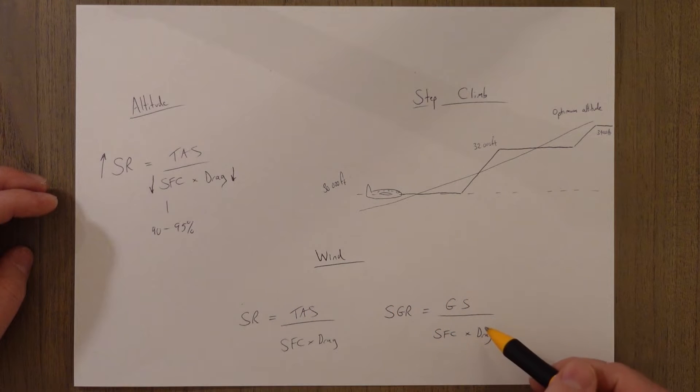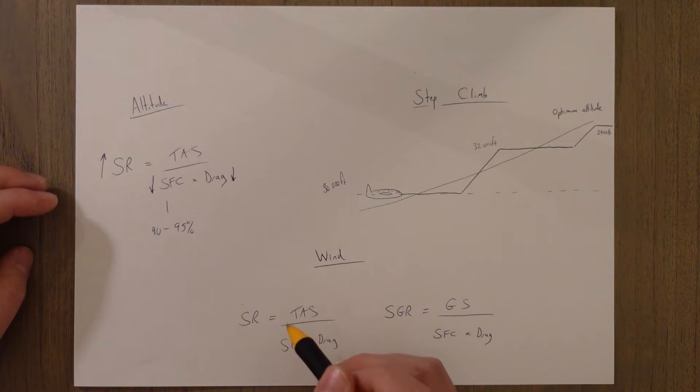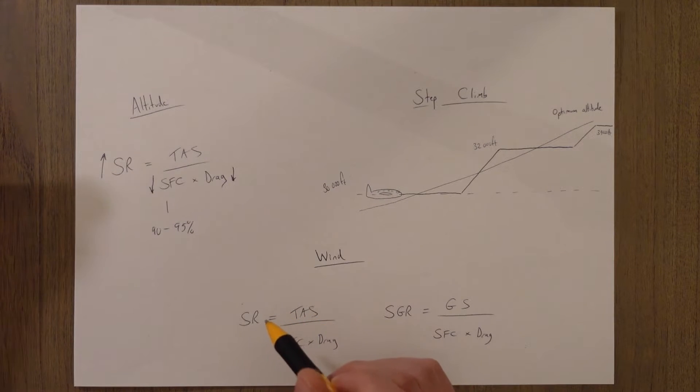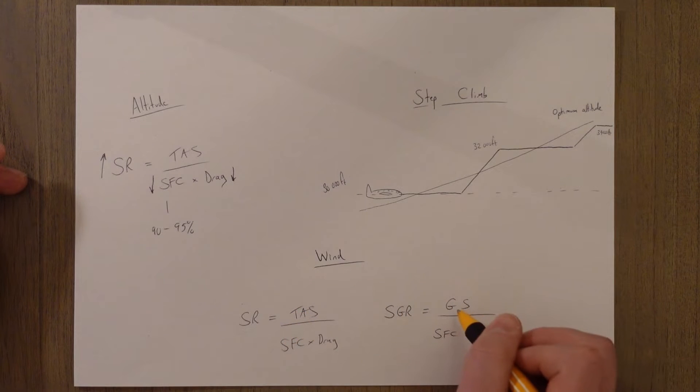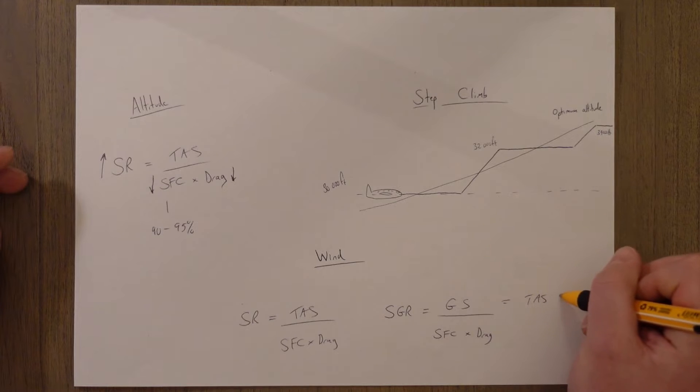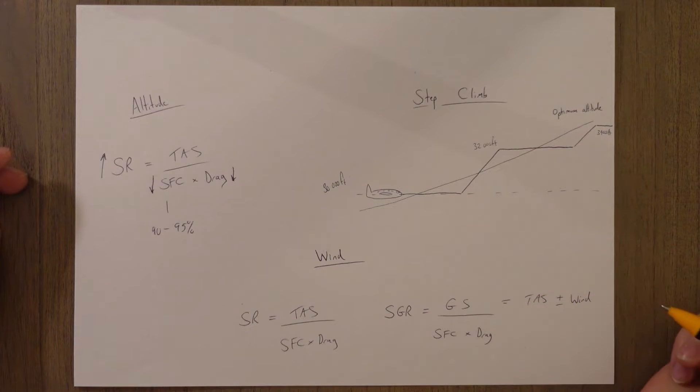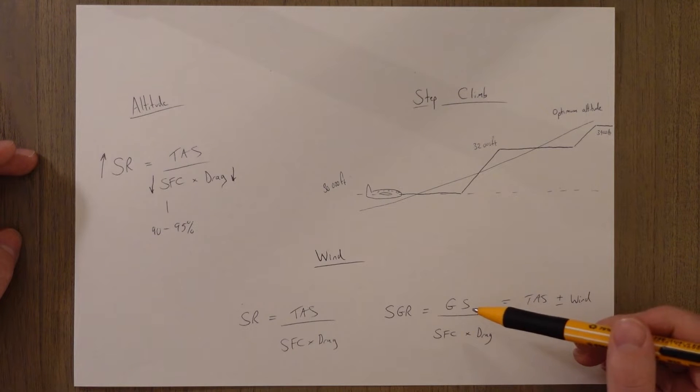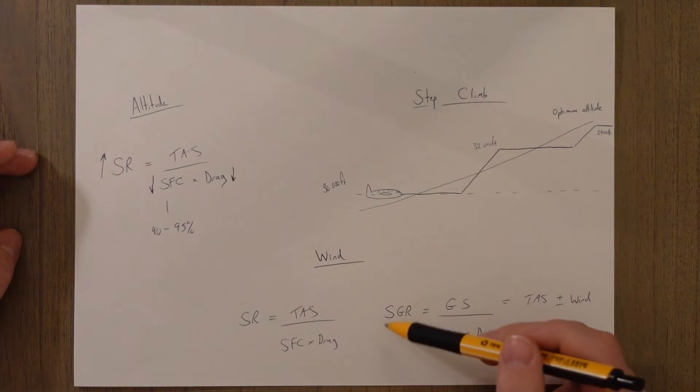So wind influences the specific ground range but not the specific air range. The specific range is the specific air range, but it's just called specific range. So basically, it's because TAS isn't affected by wind, and ground speed is equal to TAS plus or minus whatever wind component you've got. So obviously, the wind has an influence on this specific ground range but nothing to do with the specific air range. So if we had a tailwind, our ground speed goes up and our specific range wouldn't change, but the specific ground range would go up as a result. Wait, did I say tailwind? If it's a tailwind it would go up; if it's a headwind, the specific ground range would go down.